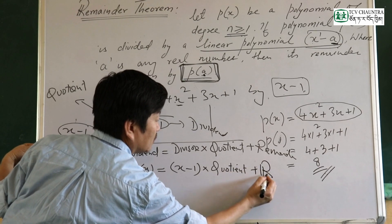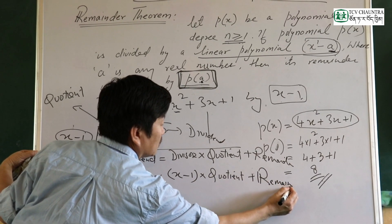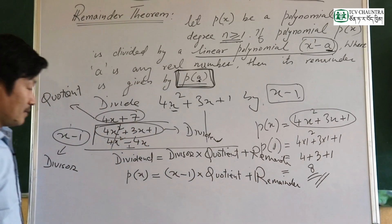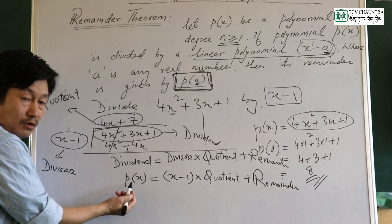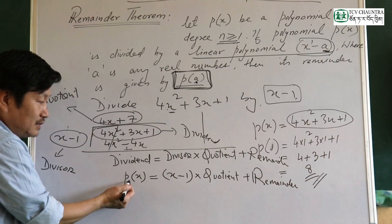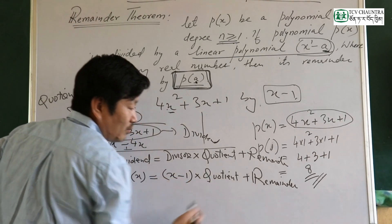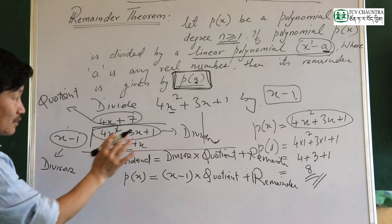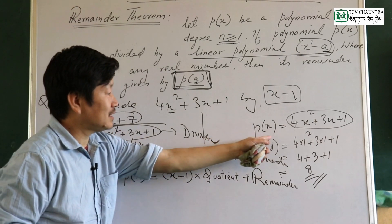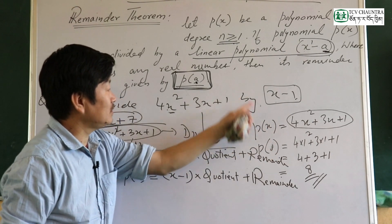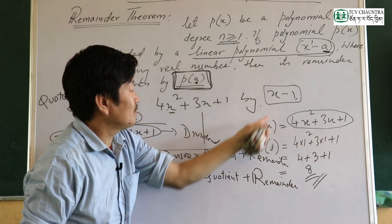The remainder is r. We can write p of x equals x minus 1 times q of x plus r, where the divisor is of the form x minus a.